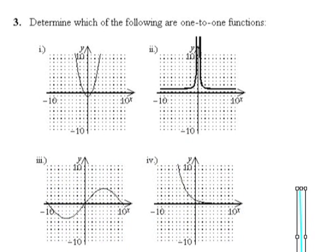Now a one-to-one function, in addition to having only one y value for every x value, has only one x value for every y value. And what that means is that it can pass the horizontal line test if it's a one-to-one function.